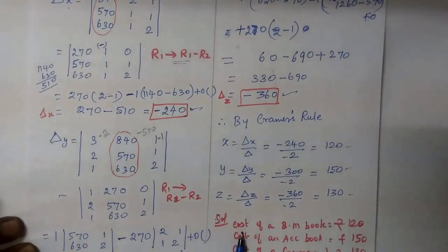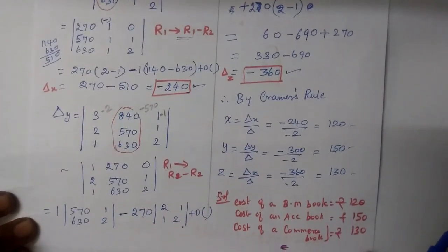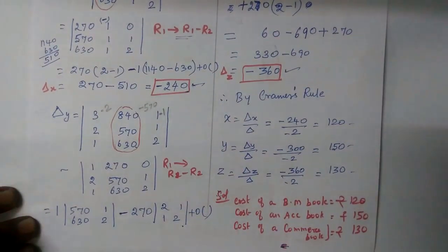Therefore the final answer: the cost of business math book is 120, cost of accountancy book is 150, and the cost of commerce book is 130.